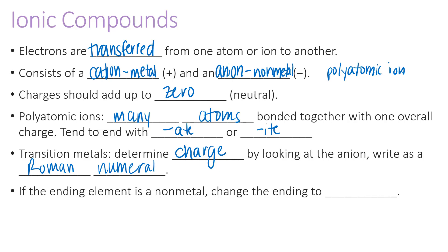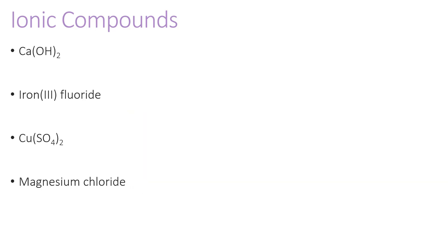If the ending element is a non-metal, you're going to change it to end with '-ide.' For example, chlorine would become chloride. Here's our first example: Ca(OH)₂. Calcium is in the plus-two column on the table of elements, so there's no need for a Roman numeral because calcium is always plus two. OH contains two different elements, which hints that we are dealing with a polyatomic ion — so this is simply calcium hydroxide.